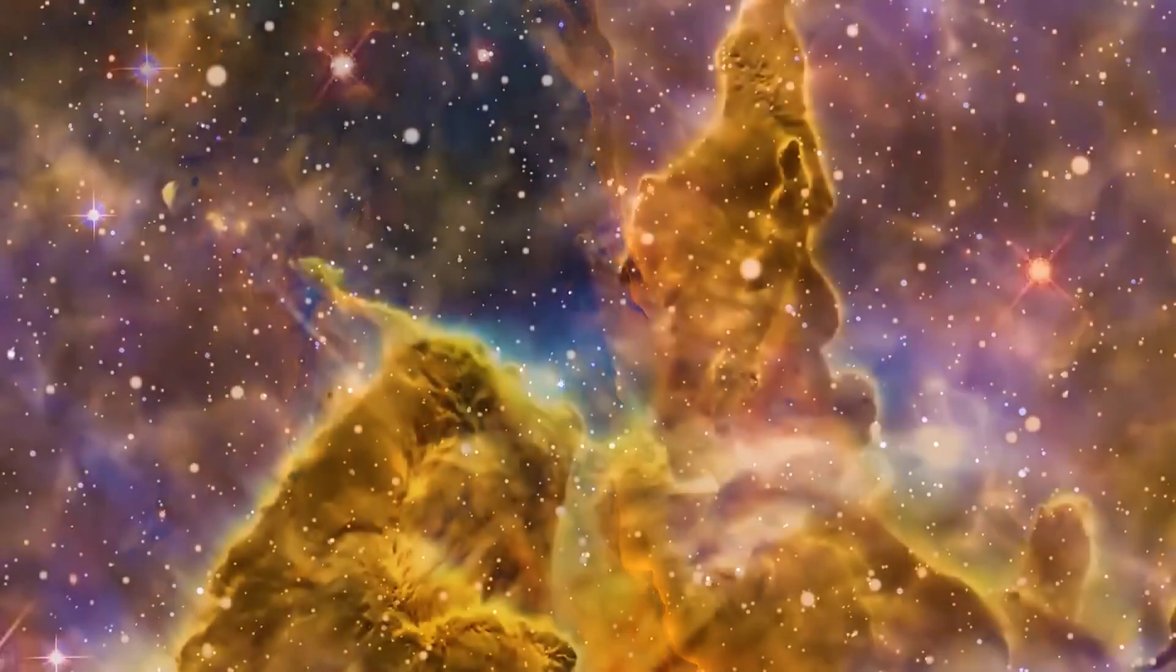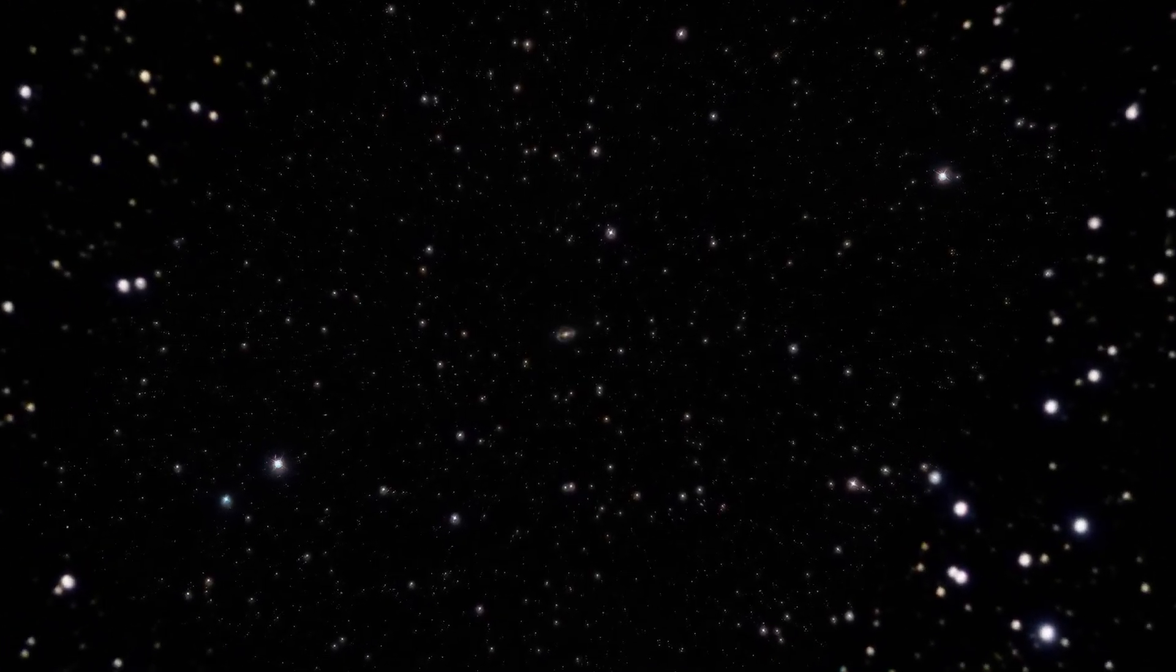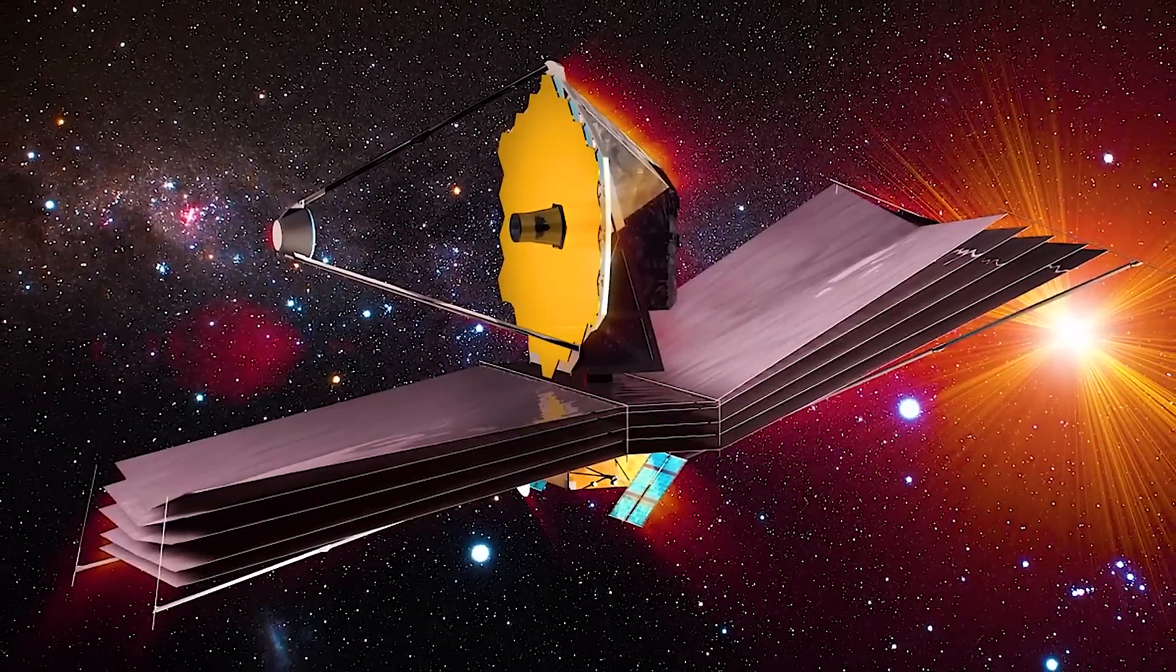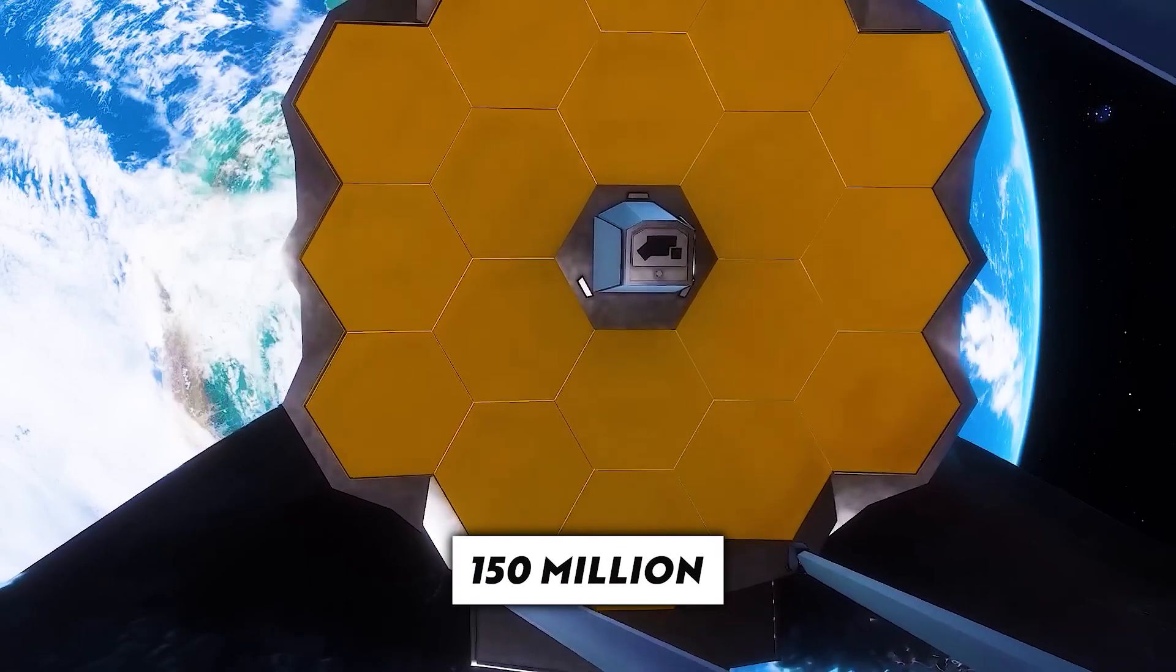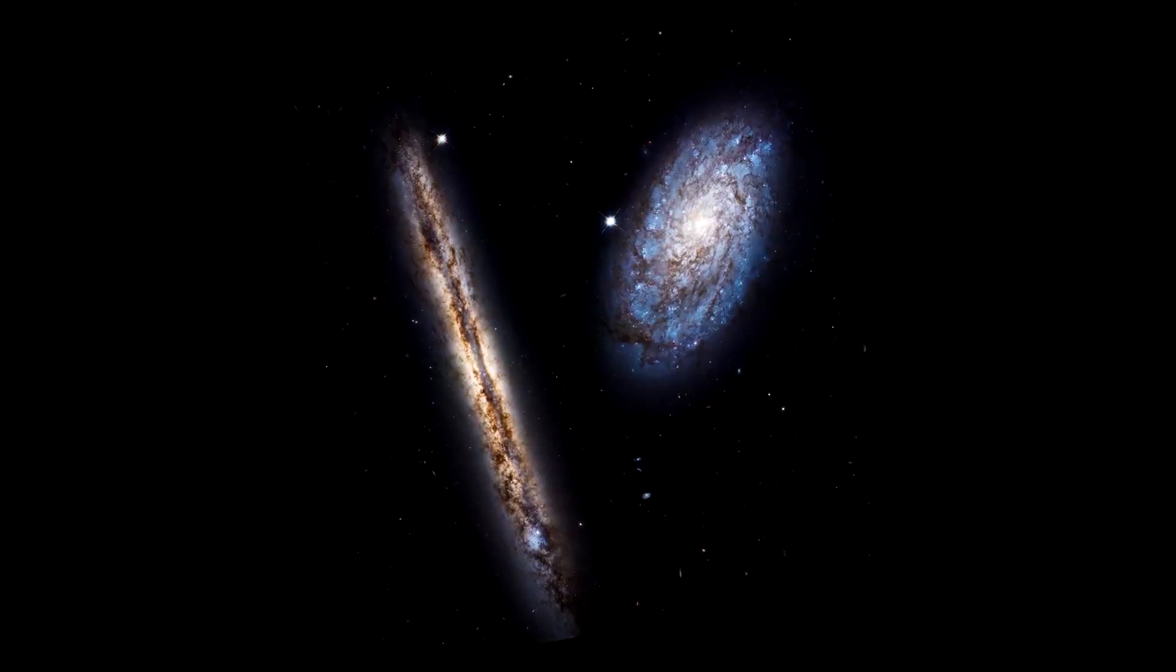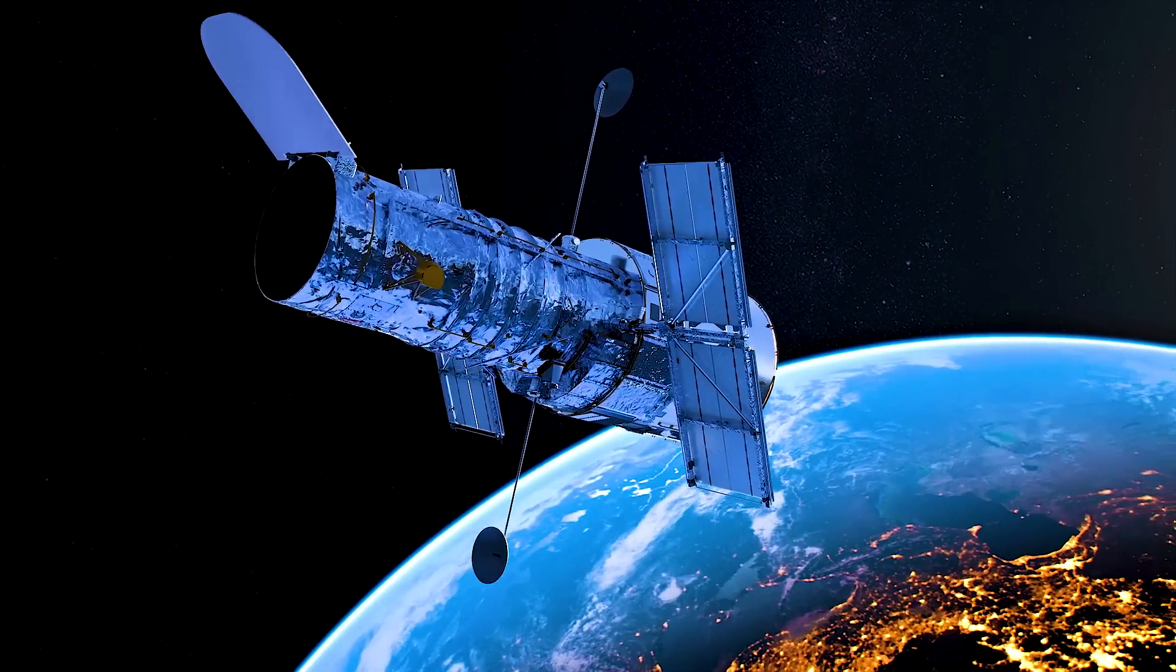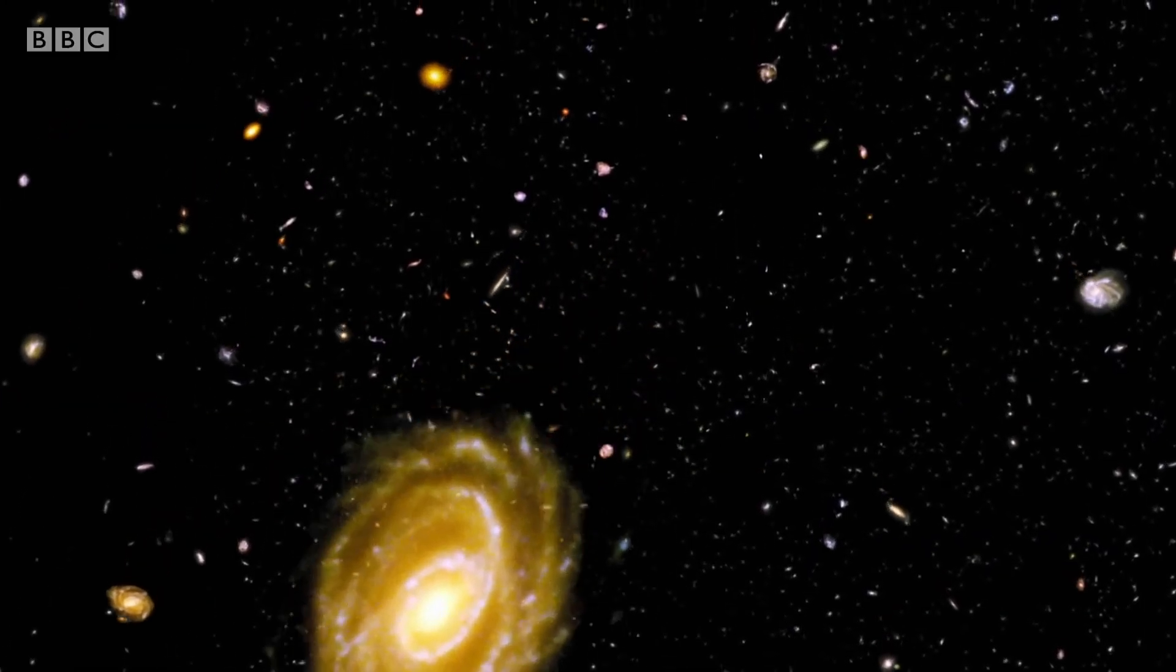Stephan's Quintet is revealed in a new light by the Webb Space Telescope. This massive mosaic, which covers nearly one-fifth of the moon's diameter, is Webb's greatest image so far. It has about 150 million pixels and is made up of nearly 1,000 different image files. The Webb data provides new insights into how galactic interactions may have influenced galaxy evolution in the early cosmos.